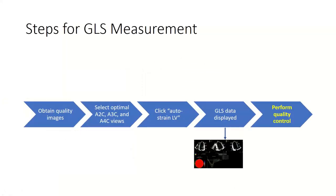Now that we understand what information we get from strain, let's move on to how we actually obtain GLS measurements. The flow is: obtain high quality images, select those images, click one button — auto strain LV — and the GLS data pops out. But then you have to go through the trouble of actually performing some quality control. The most important steps are obtaining the images and performing this quality control.